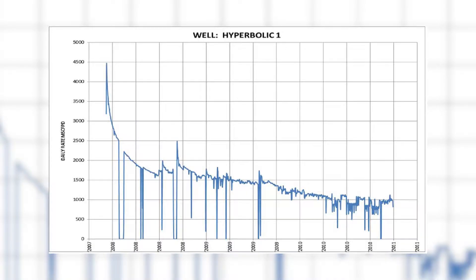Typically the production profile of a well looks like this. As you can see, over time on a linear plot you have that jagged curve going down.